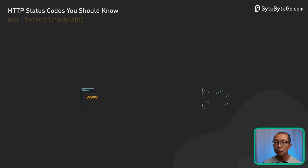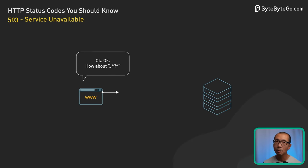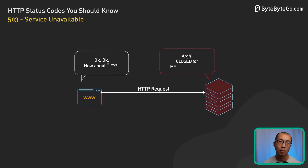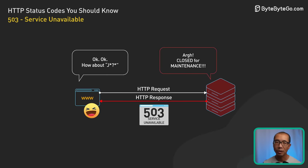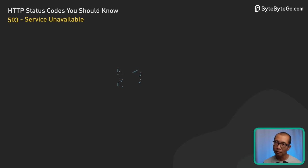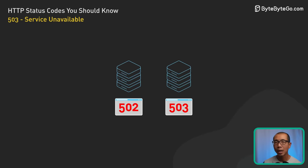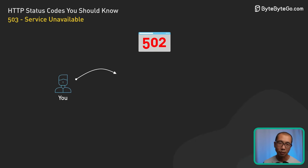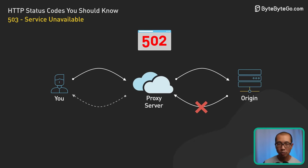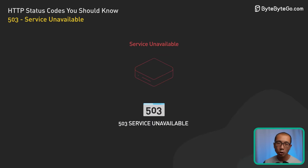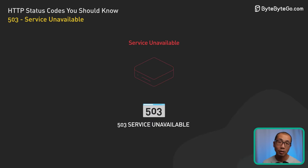503 Service Unavailable means the server just can't handle requests right now, due to maintenance or traffic overload. While both 502 and 503 hint at server issues, their origins differ. 502 is about problematic communication between servers, while 503 is about the server's current state and its inability to process requests.